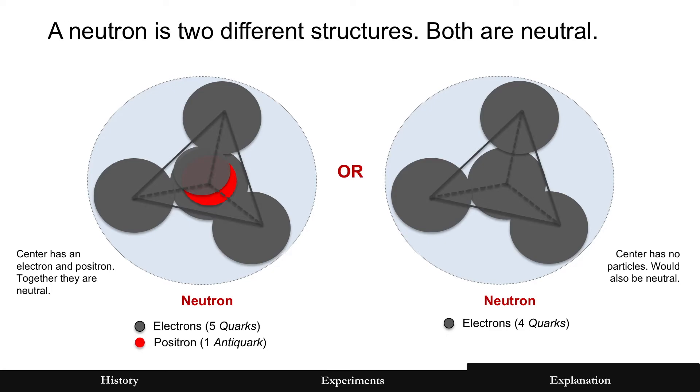Now, a neutron would be a very similar structure. The four tetrahedral quarks, which are probably electrons. But you really have two different types because both of these would be neutral. Probably the more common one is going to be the one on the left that has an electron and a positron held together loosely in the middle. But the same neutral charge, and that would be neutral, by the way, because those two particles annihilate. They're essentially neutral when they're combined. But it could also be an empty one as well. That would also be neutral.